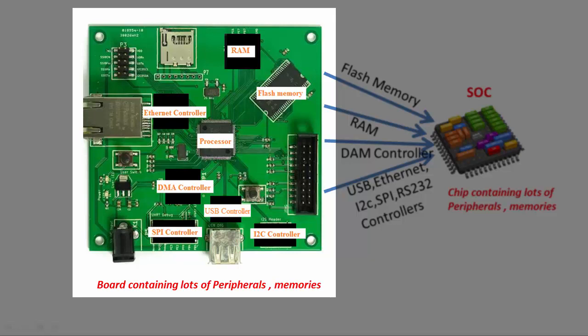For example, if you want Ethernet functionality for your application, you have to mount the Ethernet controller on the board. If you want USB functionality, you have to mount a separate USB controller chip. If you want to operate USB with DMA, you have to use a separate DMA controller on the board. Using so many controllers obviously increases your PCB size, because for every single functionality you need to mount the corresponding controller.